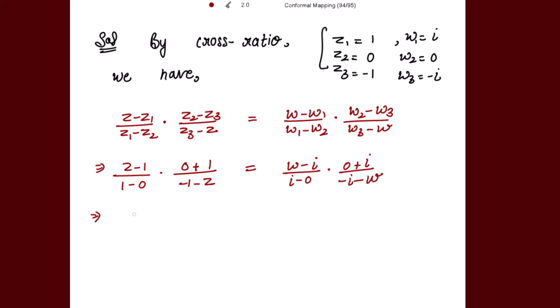This gives us (z - 1) over 1 into 1 over (-1 - z). Canceling the negative sign, this is (z - 1)/(1 + z). This equals iota × (w - iota)/(w + iota).